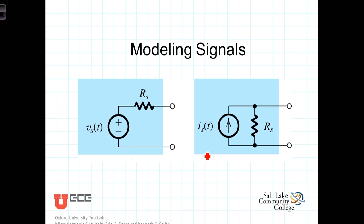You'll recall from our study of Thevenin equivalency that the Thevenin model consists of a voltage source in series with a source resistance, while the Norton equivalent model consists of a current source in parallel with a source resistance.